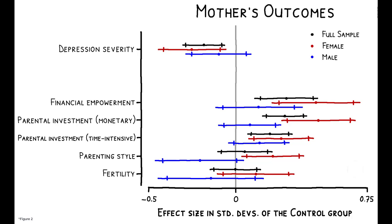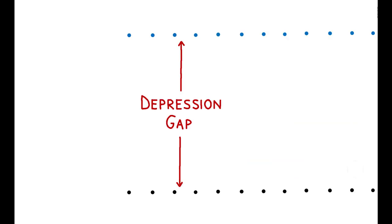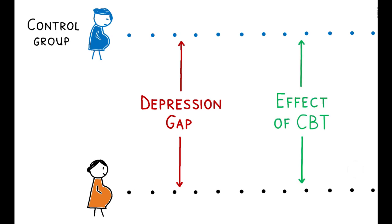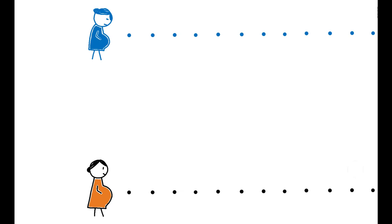To benchmark these effects, the authors compare them to the size of the depression gap. This is the difference in outcomes between control group women who were depressed at baseline and those who were not depressed. And they find that the estimated effects of CBT are similar in magnitude to this gap. In other words, one way to think about the impact of CBT is that it closes the gap in economic outcomes between prenatally depressed mothers and their non-depressed counterparts.